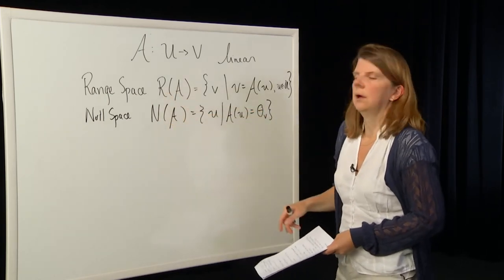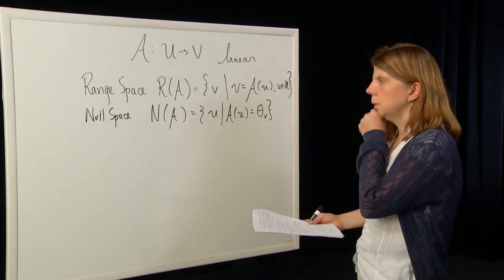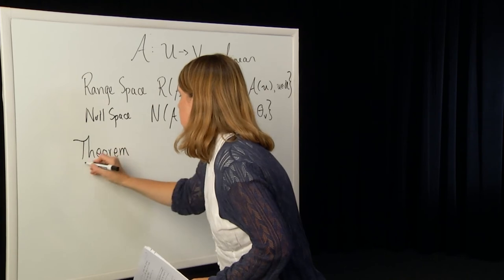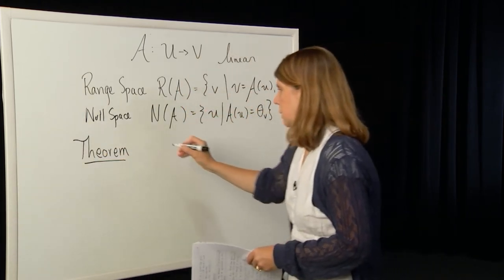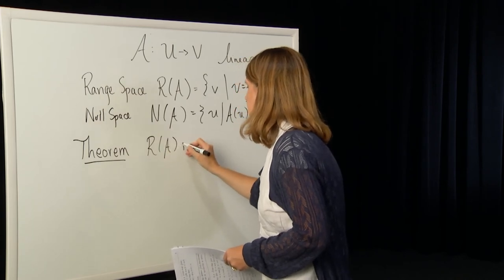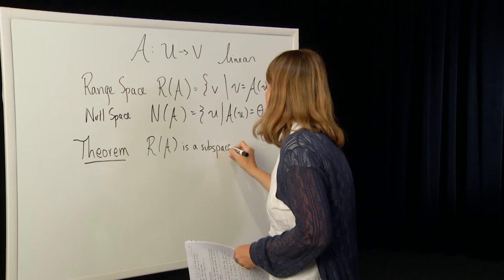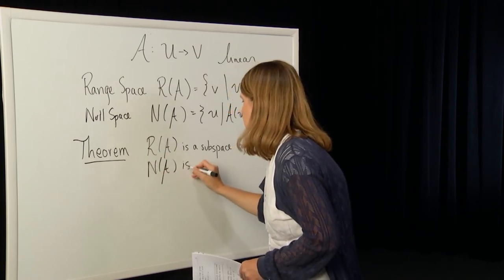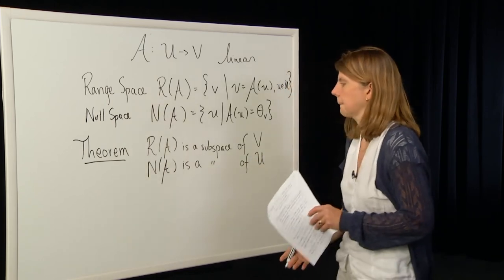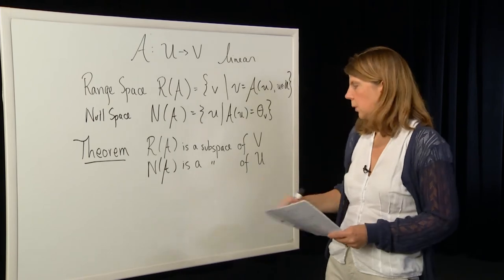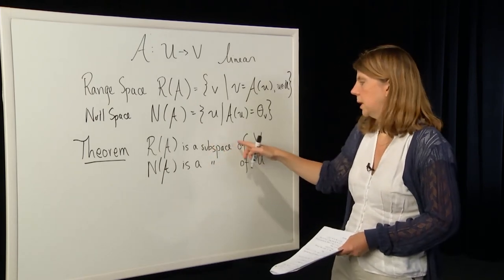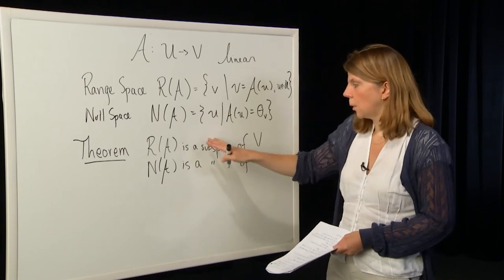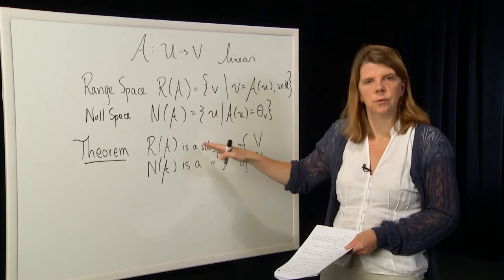There are two important theorems that are easy to prove: the range space of A is a subspace of the codomain, and the null space of A is a subspace of the domain. Recall our definition of subspace from a previous module — a subset of the corresponding space that is closed under vector addition and scalar multiplication as defined in the parent space. These are straightforward to prove and you should do so as an exercise.